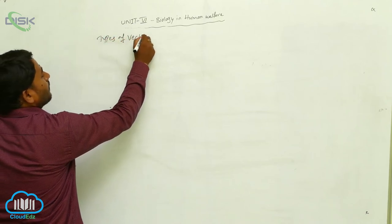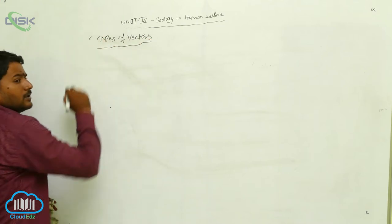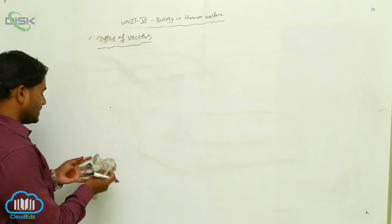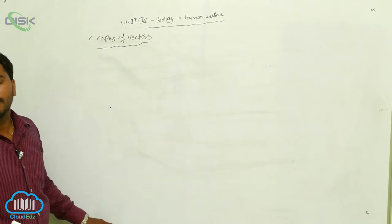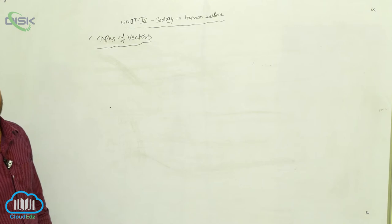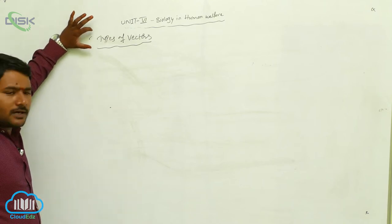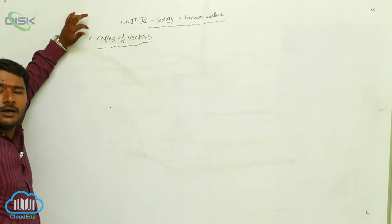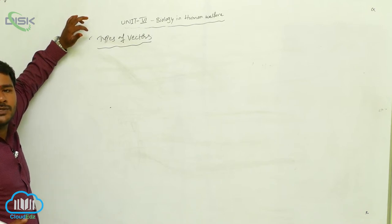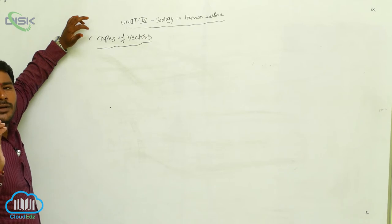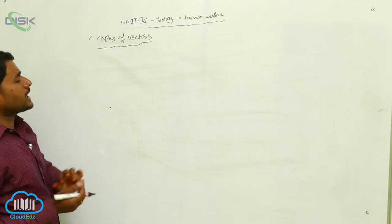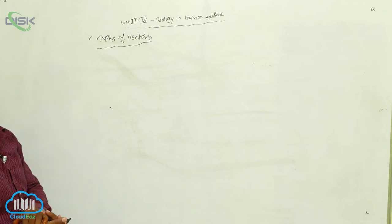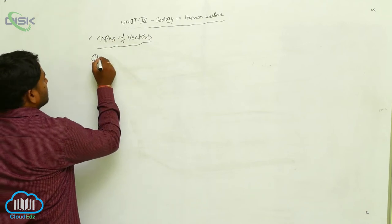Vectors are the organisms which transfer parasitic stages. Vectors are the organisms which transfer parasitic forms from one host to another host. There are two types of vectors.